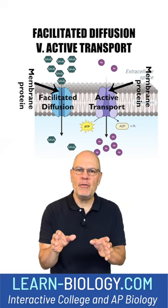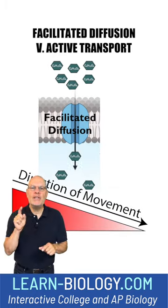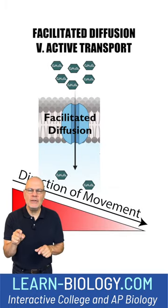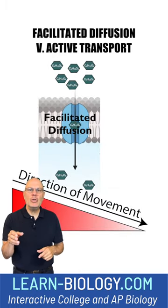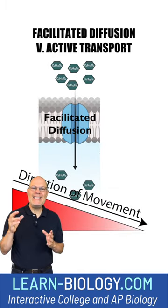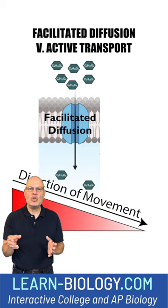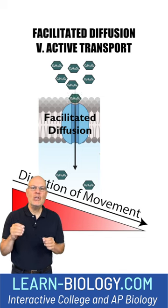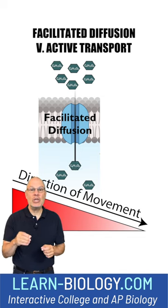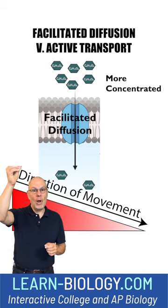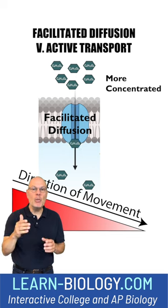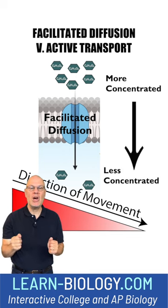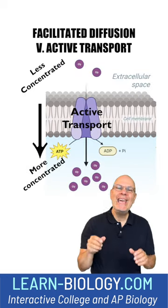Here's how you tell the difference. In facilitated diffusion, note that the molecules are always moving down a concentration gradient. The arrow shows more on one side, and then they're moving to where there's less on the other side.